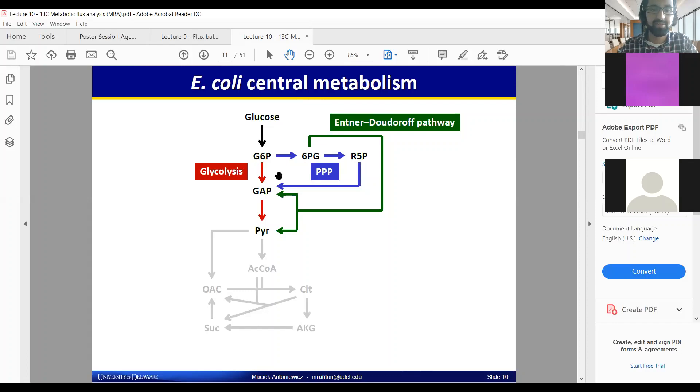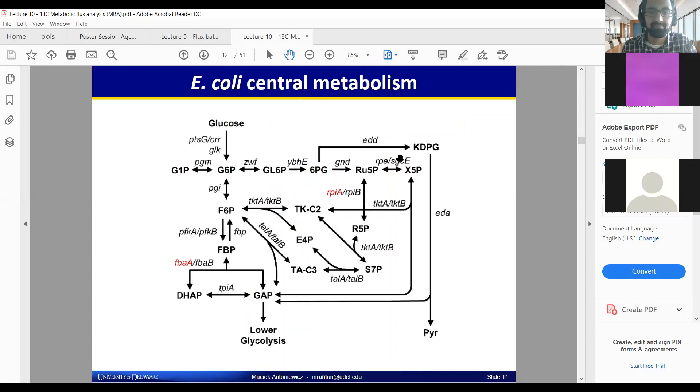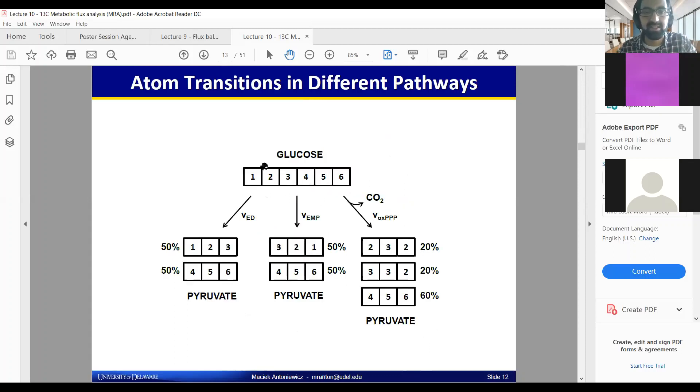This is meant to compare different routes to pyruvate. You can get there through glycolysis, pentose phosphate, or Entner-Doudoroff. This map is just a reflection of that. Pyruvate's here. The idea that I wanted to get to is that your atom transitions look really different through those three different routes to pyruvate.